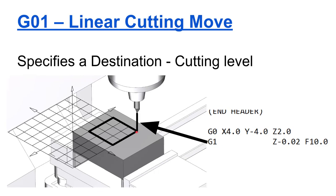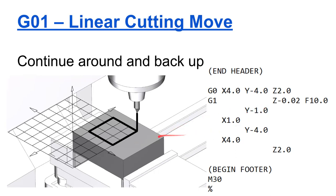After the Z plunge, we step around and do the rest. We move Y — we don't have to repeat the feed rate because we already established 10 inches per minute, and we don't have to repeat G1 because it's modal and stays G1 until we change it. The Y moves to negative one in absolute mode. Then we command X to negative one, then Y to negative four, then X to positive four.